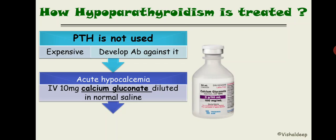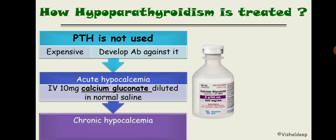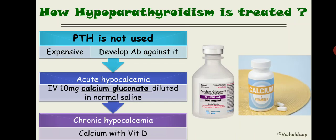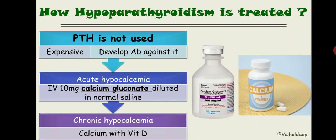For acute hypocalcemia, we give calcium in the form of calcium gluconate, diluted in normal saline in a 10 mg ratio, administered intravenously. For chronic hypocalcemia, we give a tablet of calcium containing vitamin D.